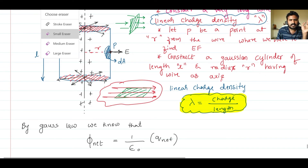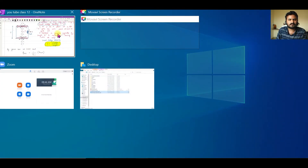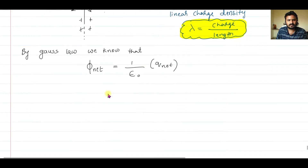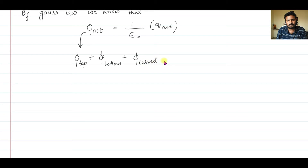So the total flux through the Gaussian cylinder equals the flux through the top surface plus the flux through the bottom surface plus the flux through the curved surface. This must equal (1/ε₀) times the net charge present within the closed surface.